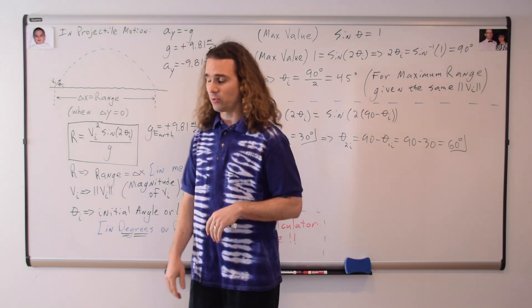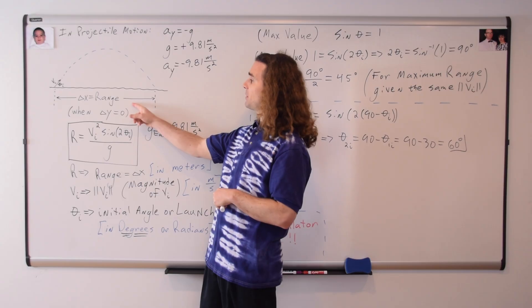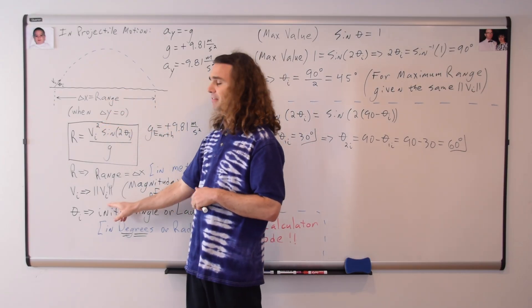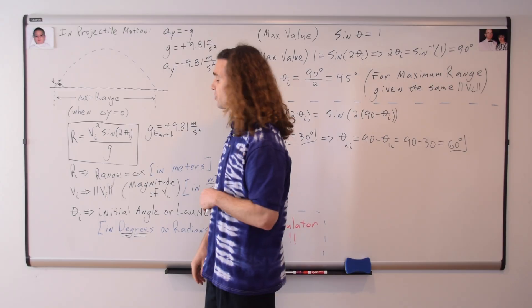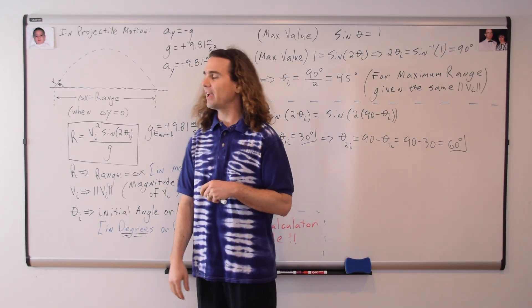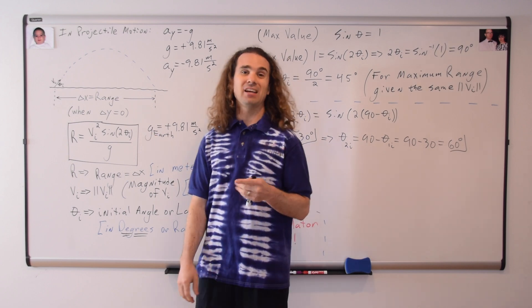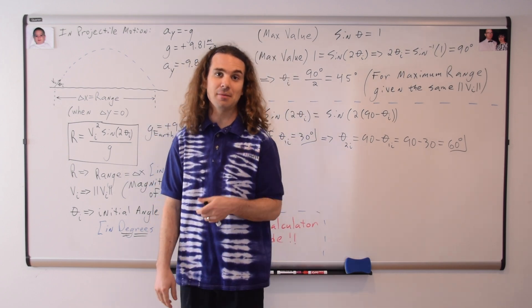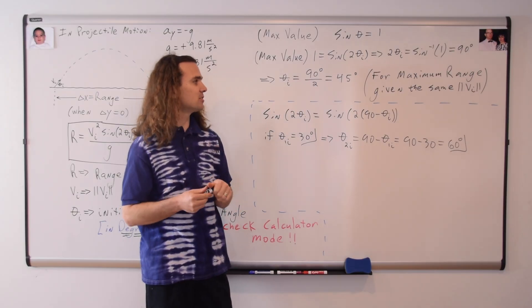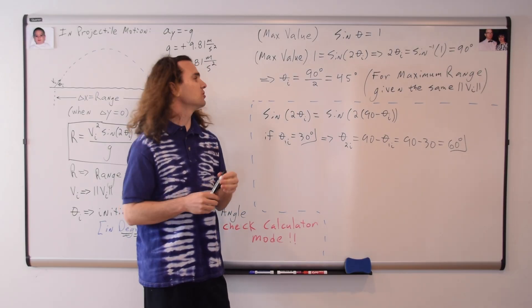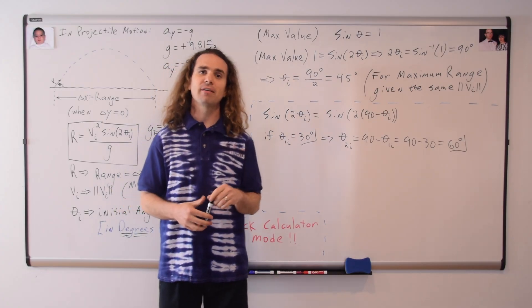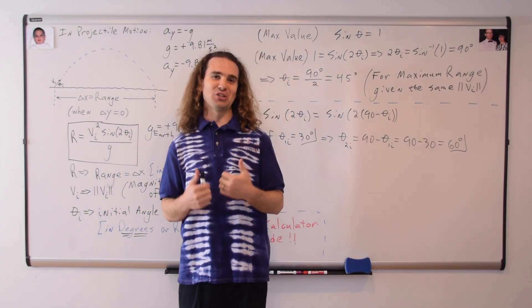Let's do a quick review. Capital R stands for the range, which is the displacement in the x direction when the overall displacement in the y direction is equal to zero. V sub i is the magnitude of the initial velocity, or the initial speed. Theta i is the initial angle, or the launch angle. G, the acceleration due to gravity here on planet Earth, is a positive 9.81 meters per second squared. Complementary angles will give you the same range, and you get the maximum range when the initial angle is 45 degrees. Thank you very much for learning with me today. I enjoyed learning with you.